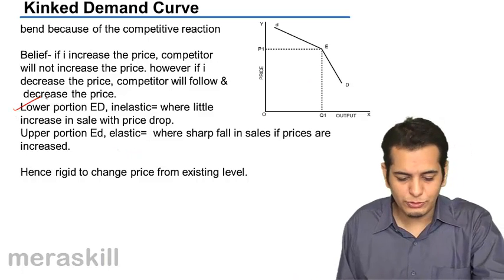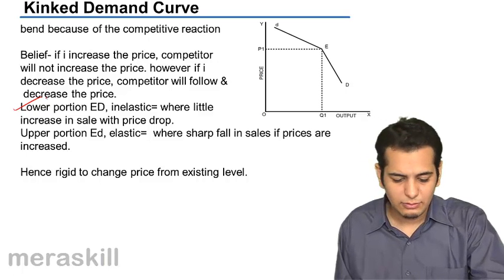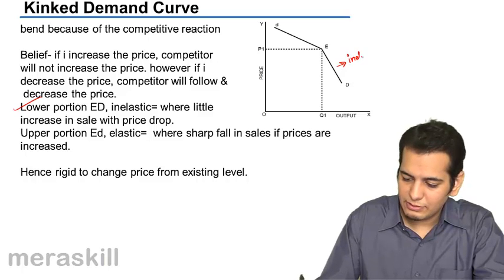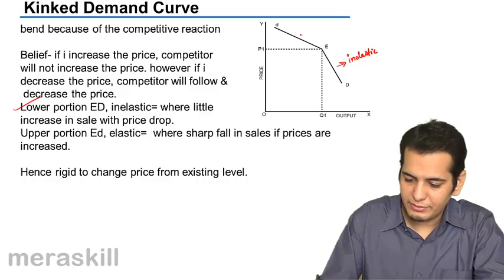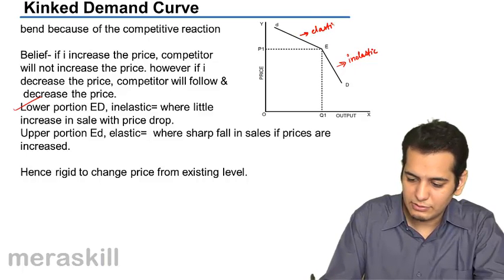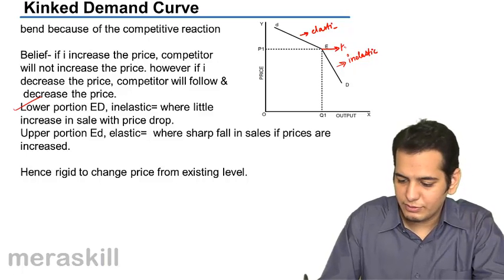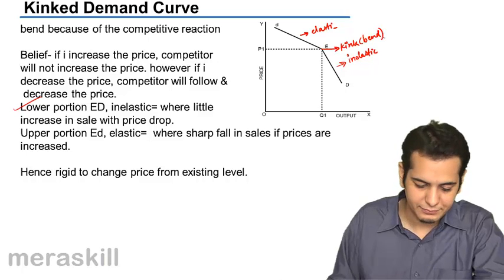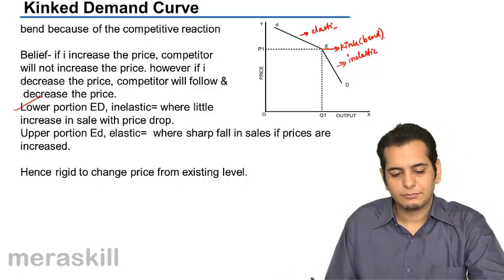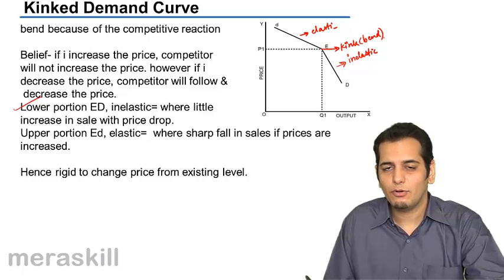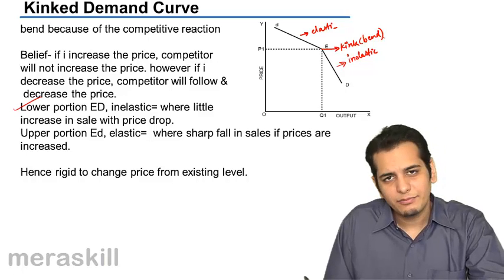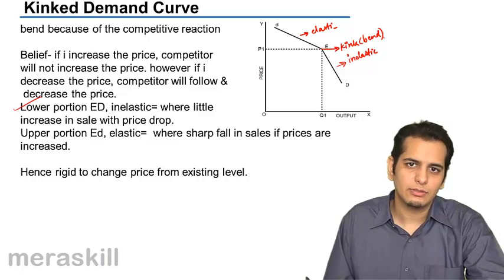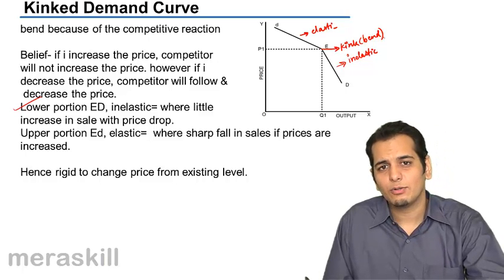We've discussed that the lower portion of the demand curve is inelastic whereas the upper portion is elastic, and because of this there is a kink — a bend — in the demand curve. This brings us to the end of the topic of oligopoly, and with the end of oligopoly, we end this chapter on markets. But before ending, let's take a quiz on the topic.